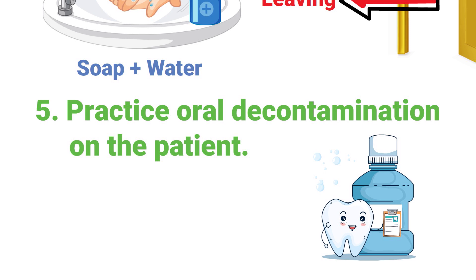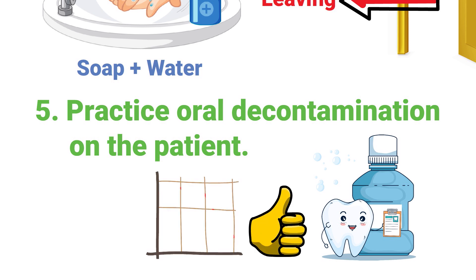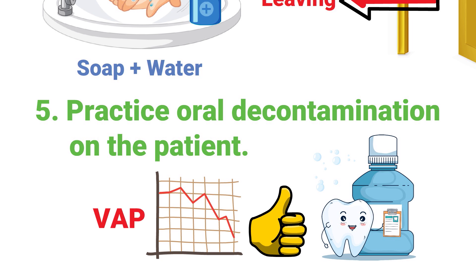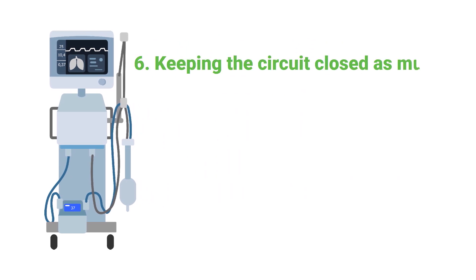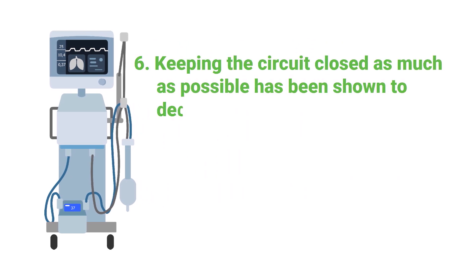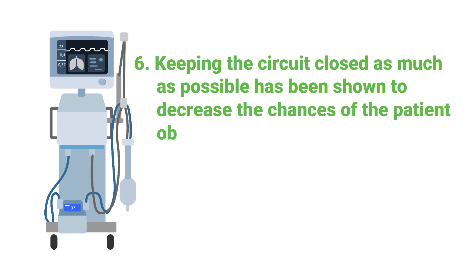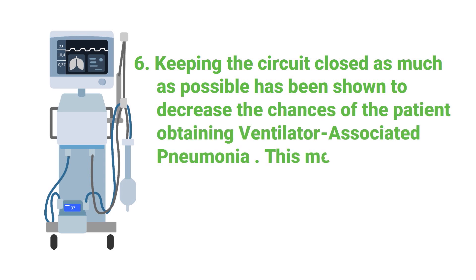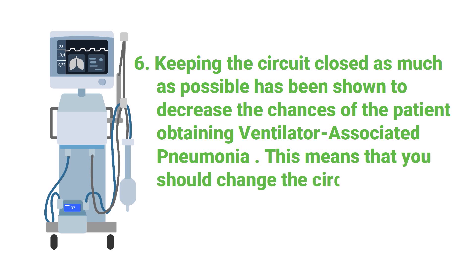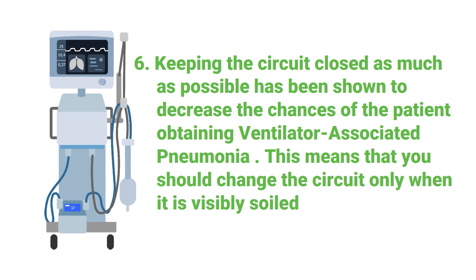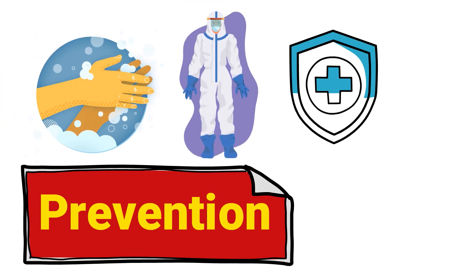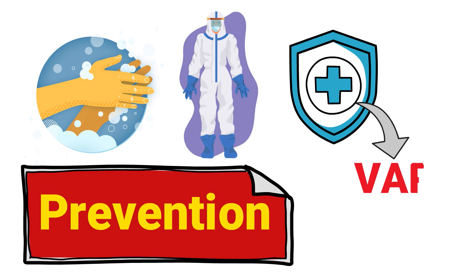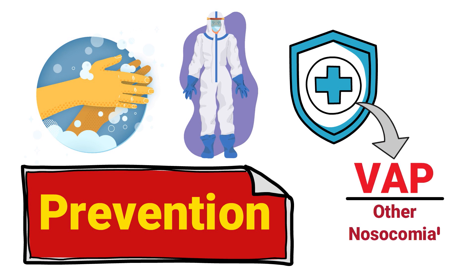The next strategy is to practice oral decontamination by performing mouth care regularly. Cleaning out the bacteria in the mouth can significantly decrease the chances of ventilator-associated pneumonia. Finally, don't break the circuit of the ventilator — keeping the circuit closed as much as possible decreases the chances of VAP. Change the circuit only when it is visibly soiled, and always use proper hand washing, PPE, and other safety measures to prevent VAP and other nosocomial infections.